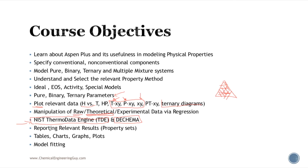We are going to learn how to report relevant results. In Aspen Plus, many results and properties are available but not all are of interest, and vice versa — some properties of interest are not shown by default. We will understand how to access them, set property sets, and review those properties.